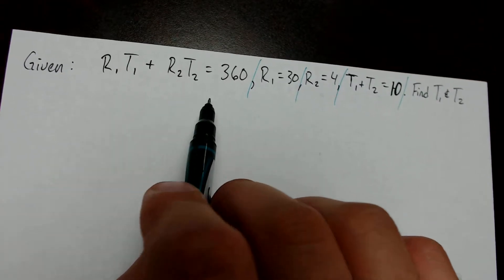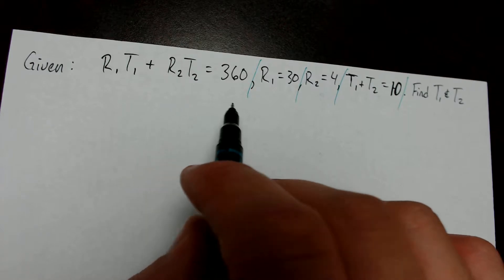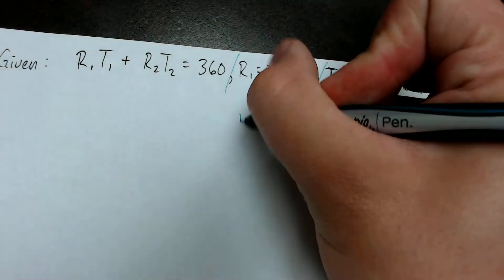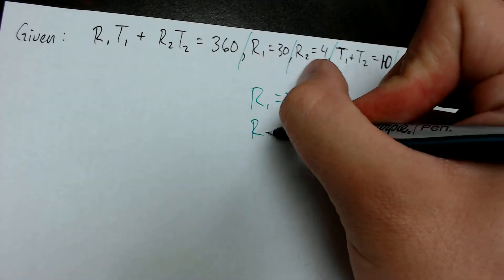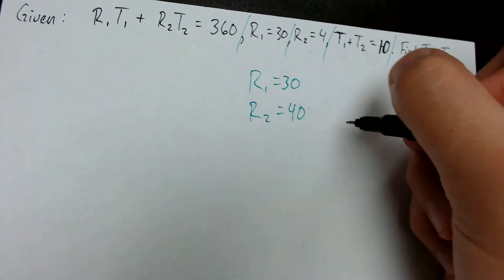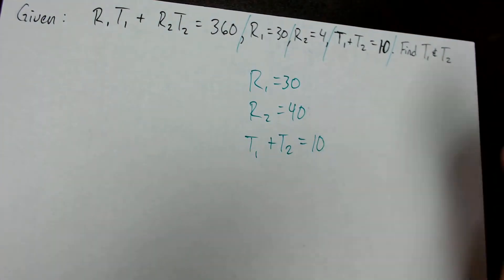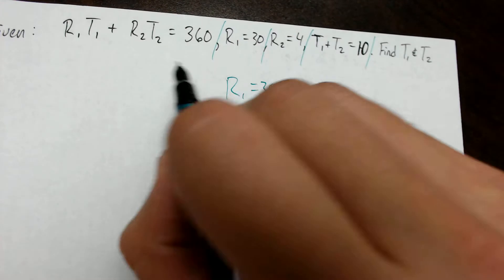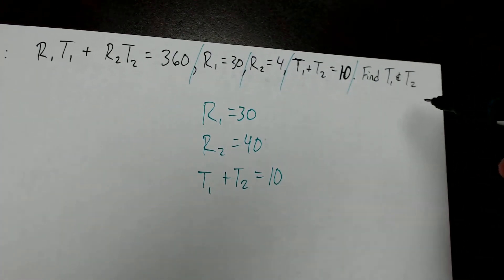The first equation we can see really quick here is R1 times T1 plus R2 times T2 equals 360. The next equation we have is R1 equals 30. Then we have that R2 equals 40, so those are already solved. And then we have T1 plus T2 equals 10. So we have this big first equation and then these three small equations right after it, and then we have to find T1 and T2.